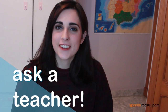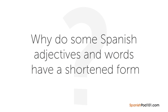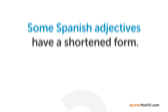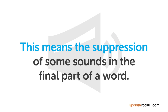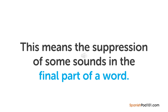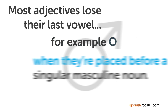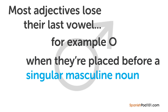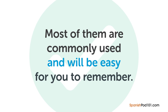Hi everybody, Rosa here. Welcome to Ask a Teacher. The question for this lesson is: why do some Spanish adjectives and words have a shortened form? Some Spanish adjectives have a shortened form called 'apócope' — meaning the suppression of some sounds in the final part of a word. Most adjectives lose their last vowel, for example 'o,' when they are placed before a singular masculine noun. There are only a few types of these adjectives in Spanish, and most are commonly used.